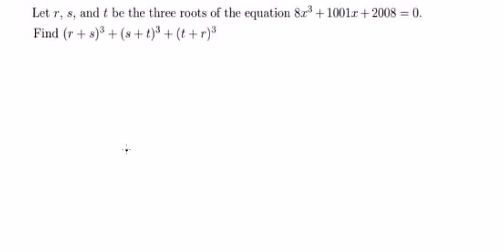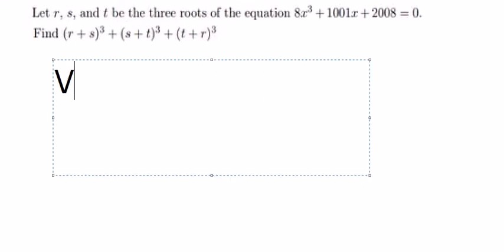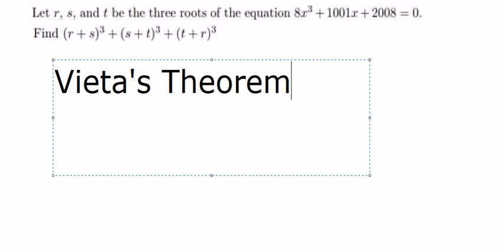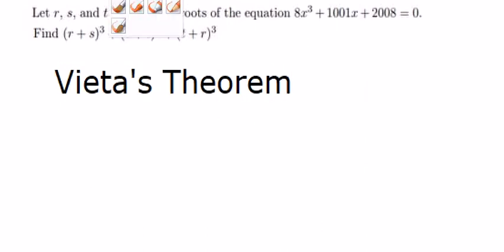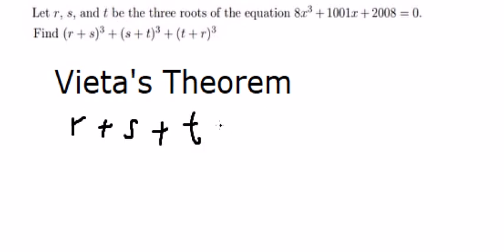Now I will show you the technique. We will apply Vieta's theorem. We know that R plus S plus T equals negative B divided by A. Here the coefficient of x² is 0, so B is 0.